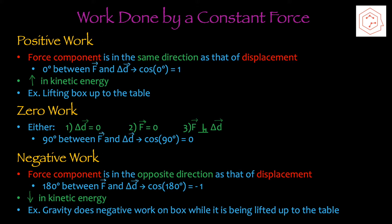For negative work, the force component is in the opposite direction as that of the displacement. For example, 180 degrees between force and displacement — cos 180 is negative 1. Negative work leads to a decrease in kinetic energy. An example is gravity doing negative work on the box while it's being lifted up to the table, since the gravitational force acts downward while the displacement of the box is upward.